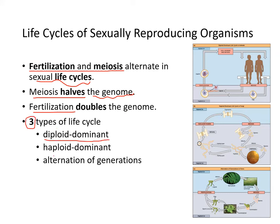There are three types of life cycles: diploid-dominant, haploid-dominant, and alternation of generations. Diploid-dominant organisms are humans like us, and haploid-dominant organisms are things like fungi.